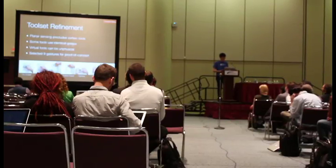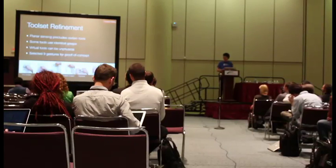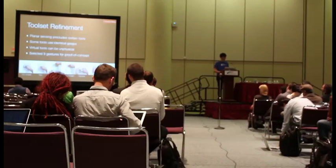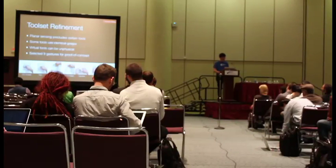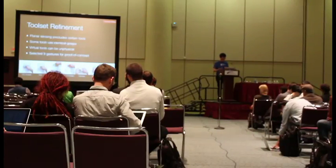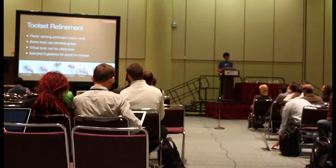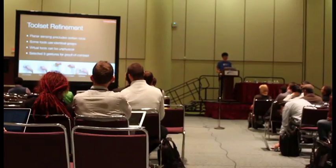The seven tools are: whiteboard eraser, pen, tape measure, rubber eraser, camera, mouse, and a knife. In combination with one-finger pan and two-finger pinch, this gives a total of nine gestures for our prototype system.